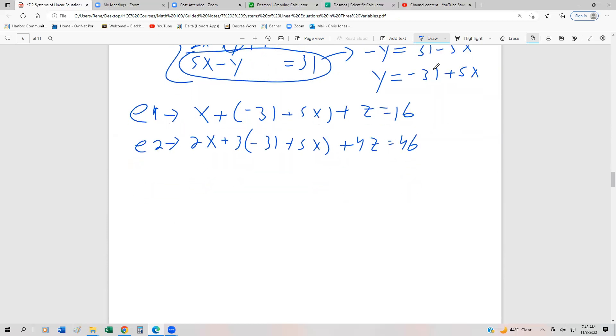Then I'm going to simplify. So I get x plus negative 31 plus 5x plus z is 16. Equation two now becomes 2x plus 3 times negative 31 plus 5x plus 4z equals 46. Distributing and collecting like terms.